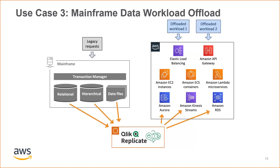In this architecture, Qlik Replicate copies mainframe data in real-time to the proper AWS datastore. If it's relational data, it fits easily in Aurora or RDS. For mainframe hierarchical or legacy data files such as indexed files, the data is converted via Qlik Replicate to the proper AWS datastore. For the offloaded function logic, AWS provides choice of compute services — that logic can be deployed on Amazon EC2, container services, or even serverless compute such as AWS Lambda. As soon as critical business transactions are offloaded or migrated to AWS, the quality of service becomes very important.